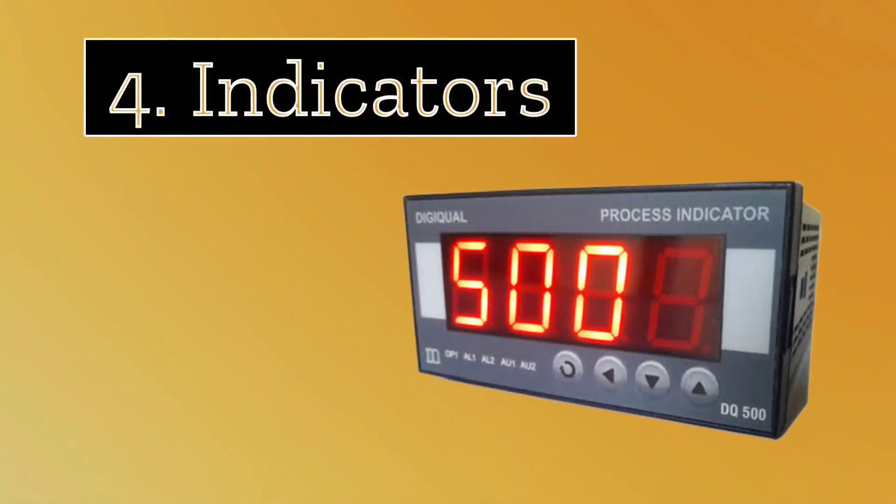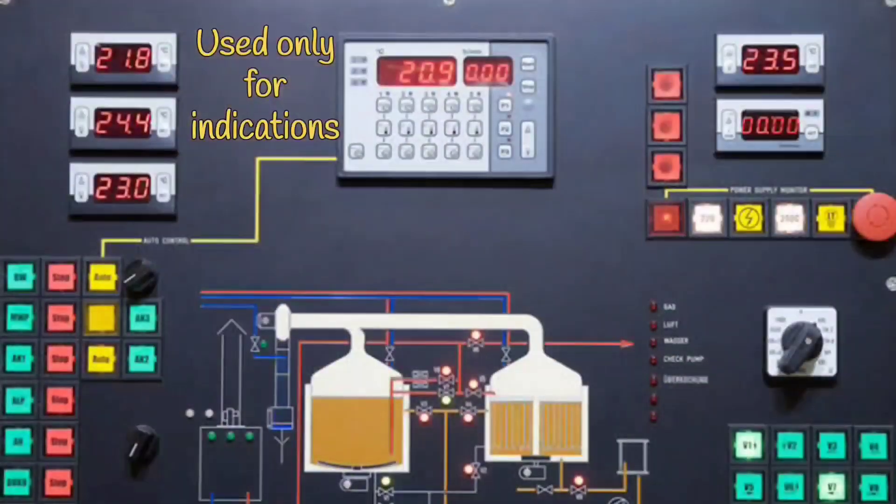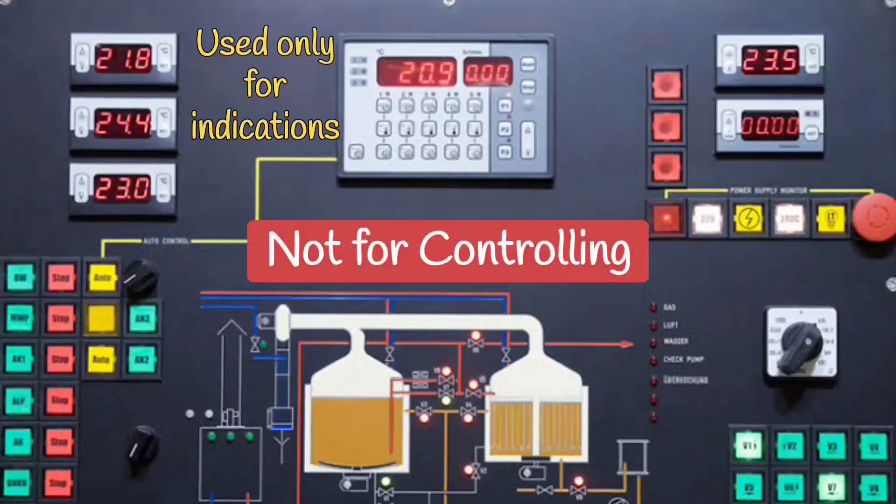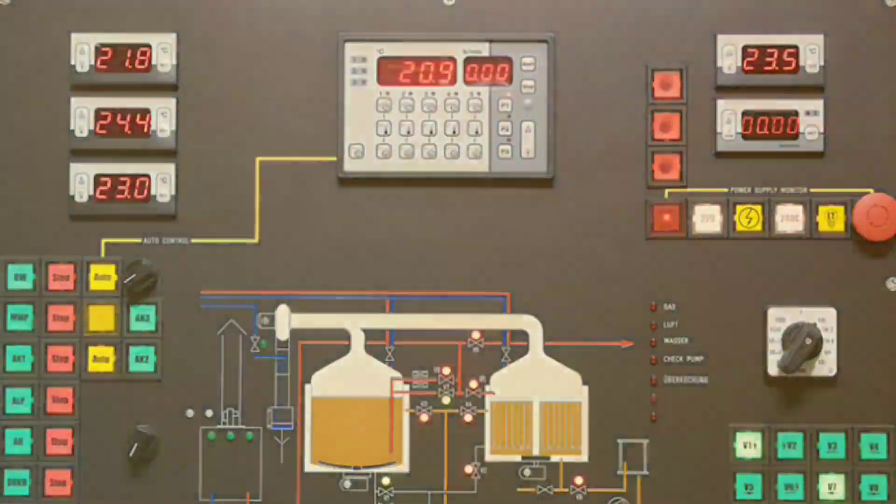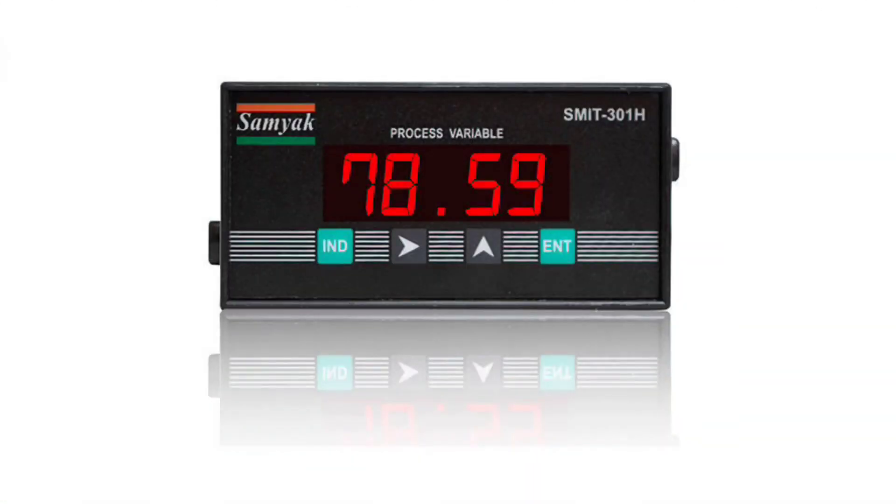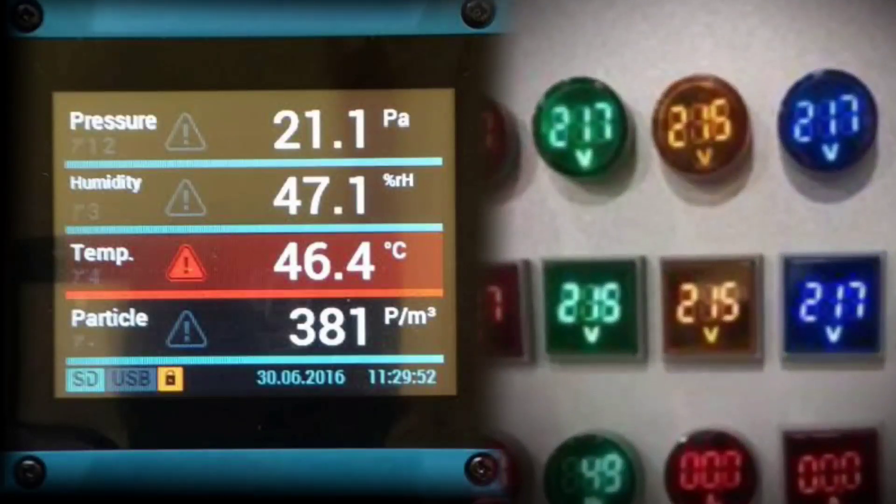So the next one is indicators. They are used only for the indication of values. They are not used for controlling. So the values of temperature, pressure, level have to be only shown somewhere. Indicators will be used there. Let's move forward.